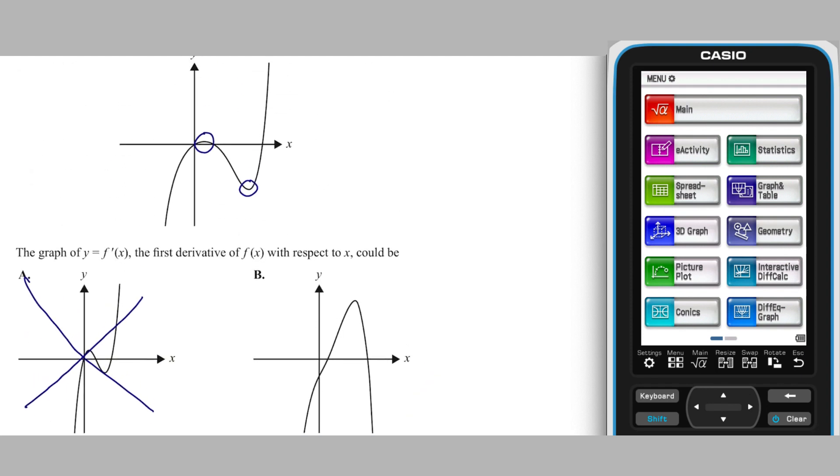This leaves us with options b and e. b and e are very similar looking curves. The feature that will help determine which of these curves is our answer is the non-stationary inflection point that lies between the two stationary points on the graph of y equals f of x.